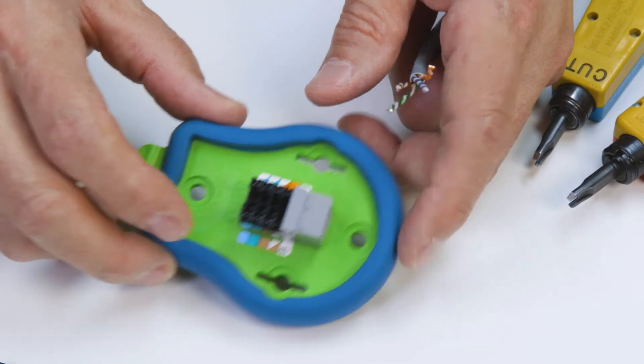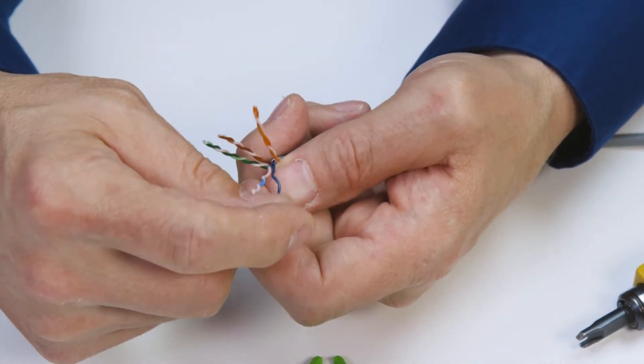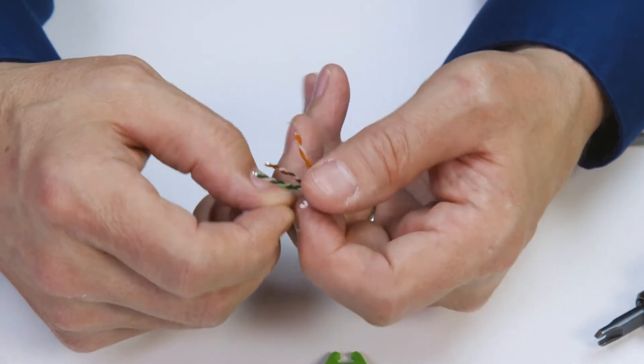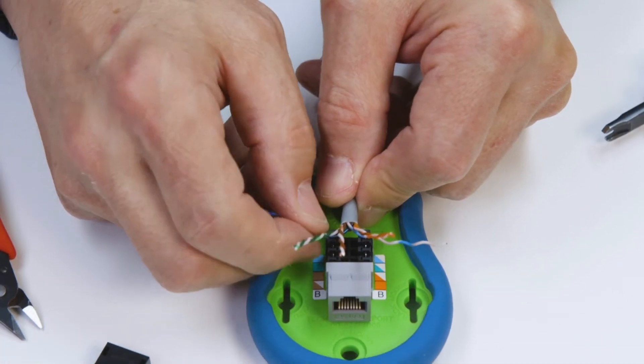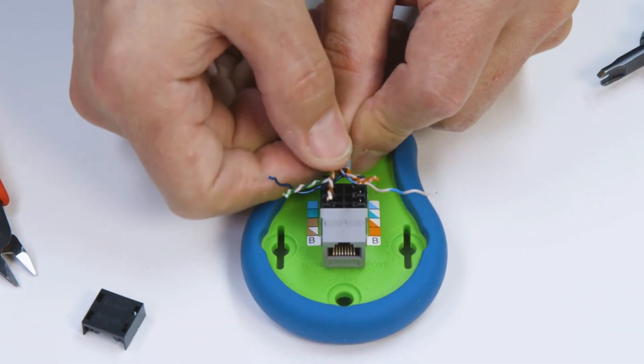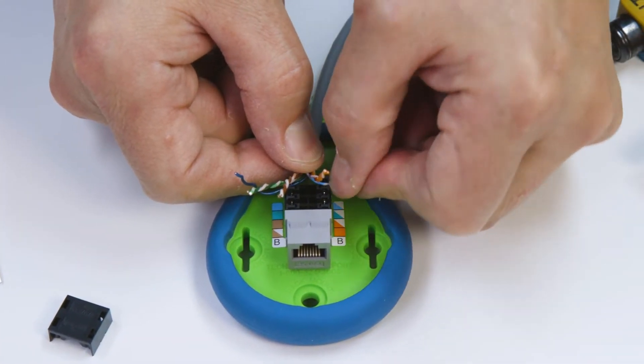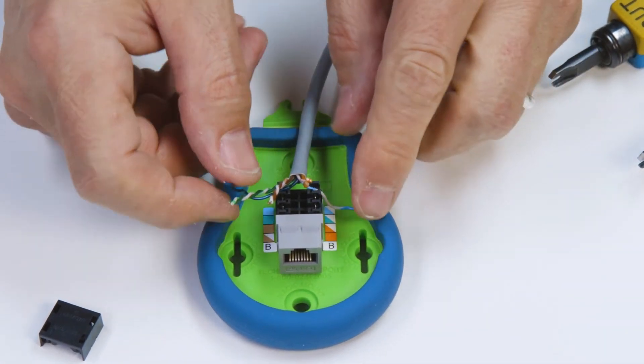Here we'll be terminating to a B wiring method. From the back of the jack, work your way forward one pair at a time. Starting with the blue pair, untwist the wires all the way back to the cable jacket. Then set them into the corresponding slots following the color code on the label.